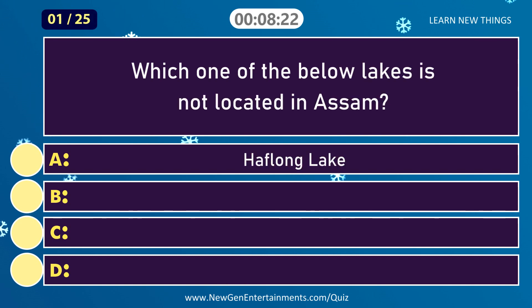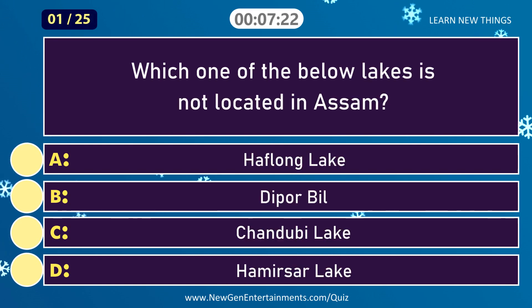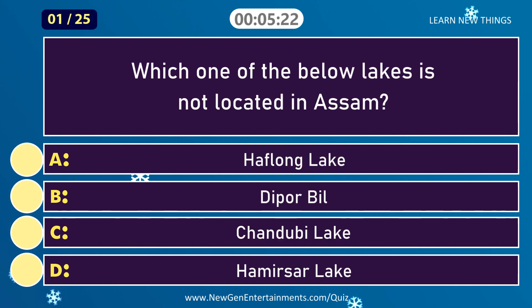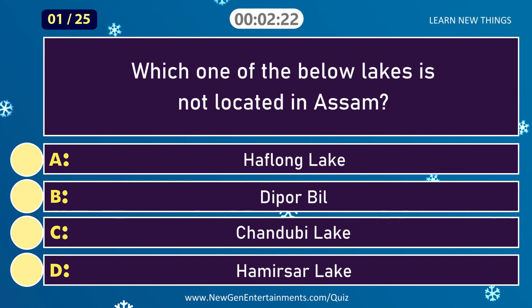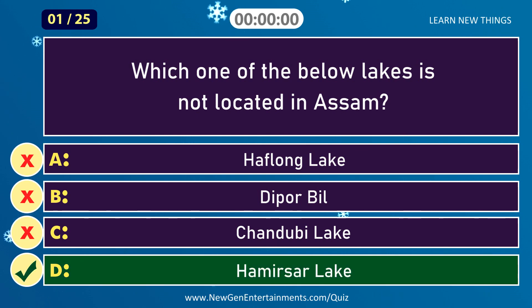Which one of the below lakes is not located in Assam? Answer: Hamirsar Lake.